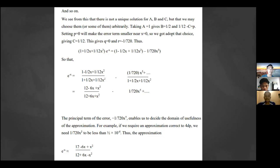The principal term of the error, -1/720 x⁵, enables us to decide the domain of usefulness of the approximation. For example, if we require an approximation correct to four decimal places, we need (1/720)x⁵ to be less than half times 10^(-4).